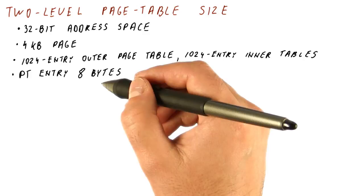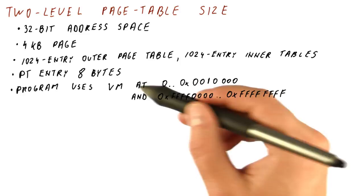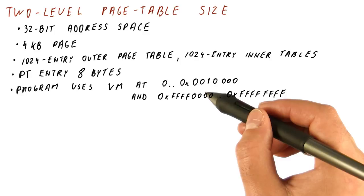Assuming that our page table entries are 8 bytes and that we have a program that uses virtual memory at the beginning of memory from addresses 0 through this, and at the top of the memory from address this to the end.